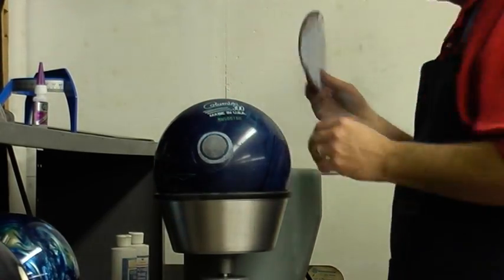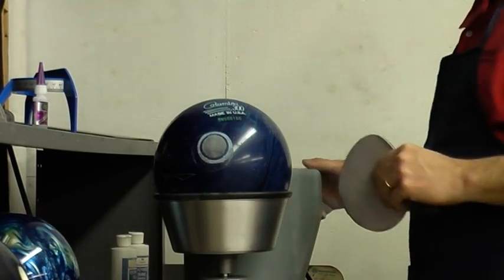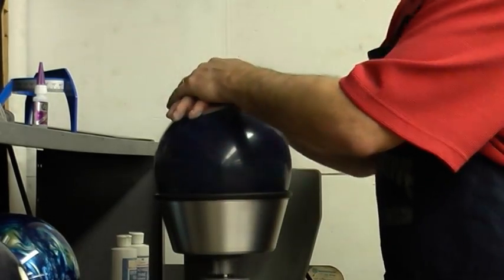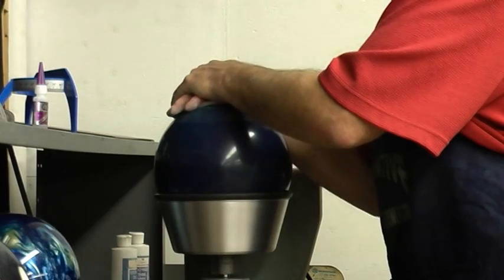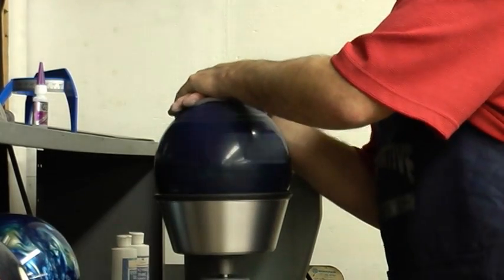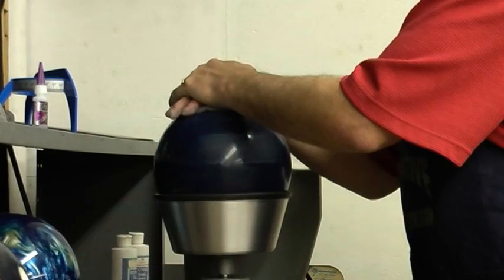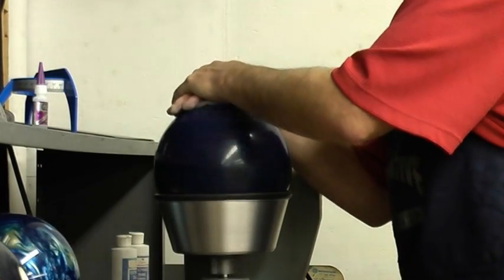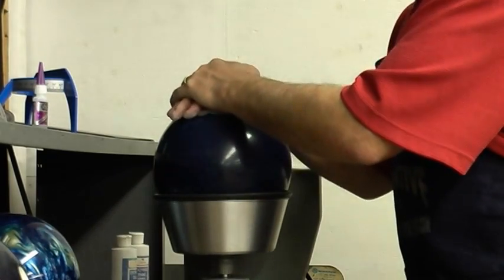Now we can move up to the next step. I started with a 500, now I'm going to go to a 1000. This ball came to the Pro Shop shiny. I'm going to just return it back to its original characteristics.